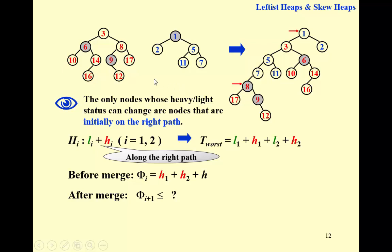Why do all heavy nodes on the right path become light after merge? If a node was heavy, it means it had a larger right subtree. During the merge process we blindly swap its left and right children. After swapping, its right subtree is supposed to be smaller and the new left subtree is supposed to be larger. We then do all operations in the left subtree, which gets heavier and heavier, while the right subtree stays small. So a node that was heavy is guaranteed to become light after swapping.